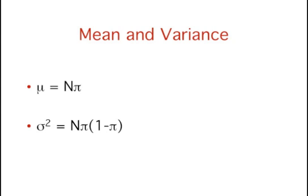In general, the mean of a binomial distribution with parameters n, the number of trials, and pi, the probability of success for each trial, is mu equals n times pi. Mu is the mean of the binomial distribution. The variance of the binomial distribution is sigma squared equals n times pi times 1 minus pi. Sigma squared is the variance of the binomial distribution.